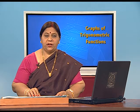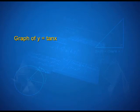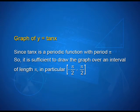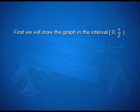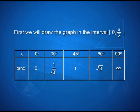Let us see how the graph of y = tan x looks like. Since tan x is a periodic function with period pi, it is sufficient to draw the graph over an interval of length pi, in particular between −pi/2 and pi/2. We draw the graph in the interval 0 to pi/2 using the fact that tan x is increasing there. The table gives: tan 0° = 0, tan 30° = 1/√3, tan 45° = 1, tan 60° = √3, and tan 90° = infinity.